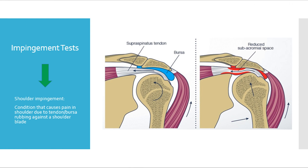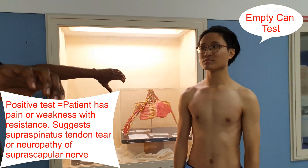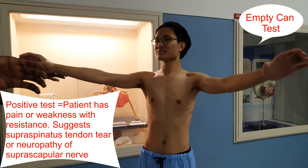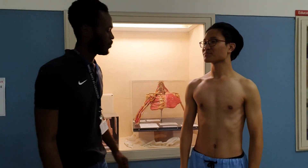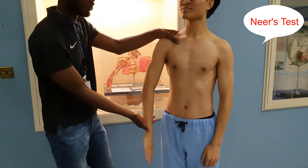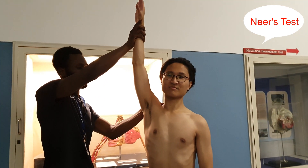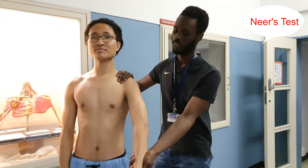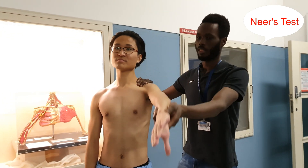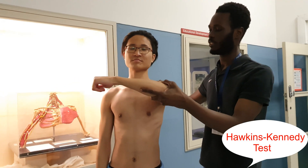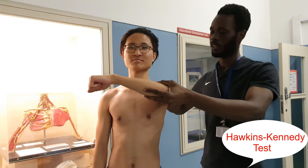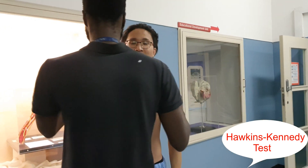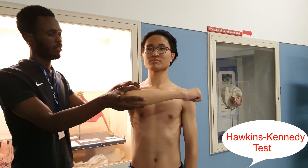Now we move on to impingement tests, which test for shoulder impingement — a condition that causes pain in the shoulder due to a tendon or bursa rubbing against the shoulder blade. One of the impingement tests you can do is the empty can test. Neer's impingement test: stabilise the patient's scapula with one hand. The patient's arm, which is pronated, is then maximally elevated through forward flexion, causing a jamming of the greater tuberosity against the anterior inferior acromion. Pain indicates a positive test for impingement. The Hawkins-Kennedy test is done by forward flexing the arm to 90 degrees and then forcibly internally rotating the shoulder. Pain on internal rotation indicates possible impingement or supraspinatus tendonitis.